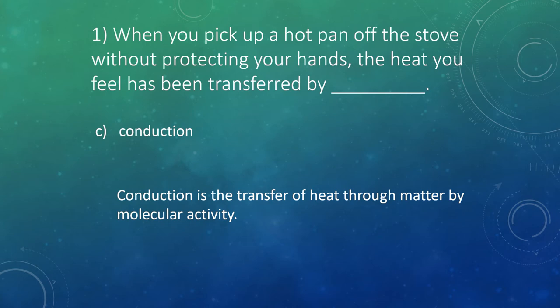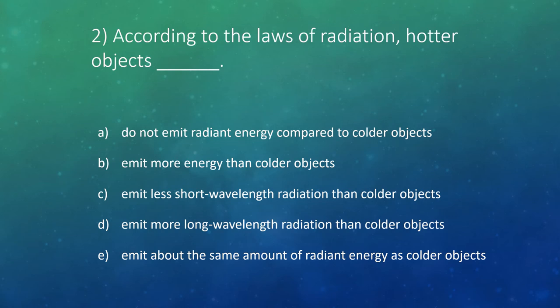According to our laws of radiation, hotter objects will emit more energy than colder objects — the hotter something gets, the more brightly it tends to glow, or the more luminous it is.